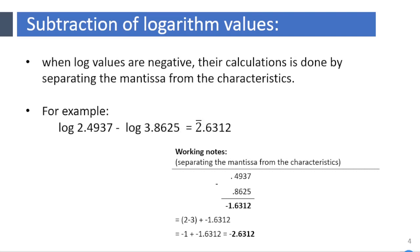Similarly, when log values are negative, their calculations is done by separating the mantissa from the characteristics. For example, log 2.4937 minus log 3.8625 is equal to minus 1.6312. Please refer the working notes.